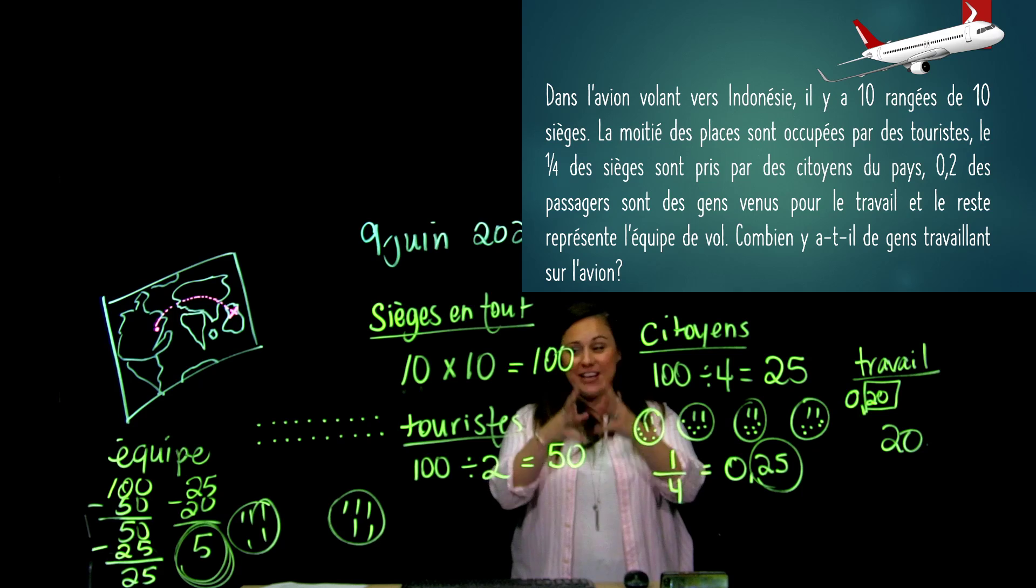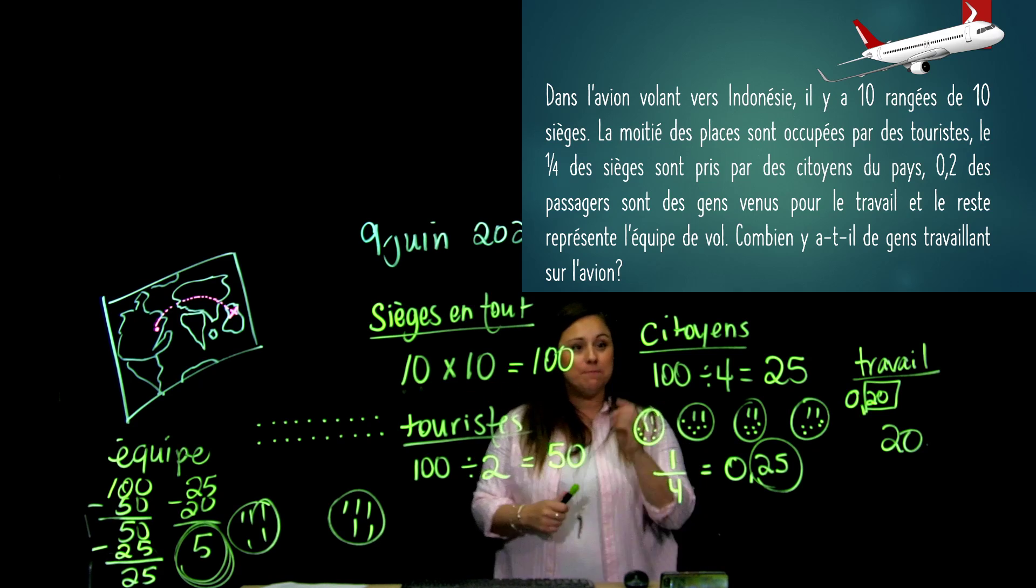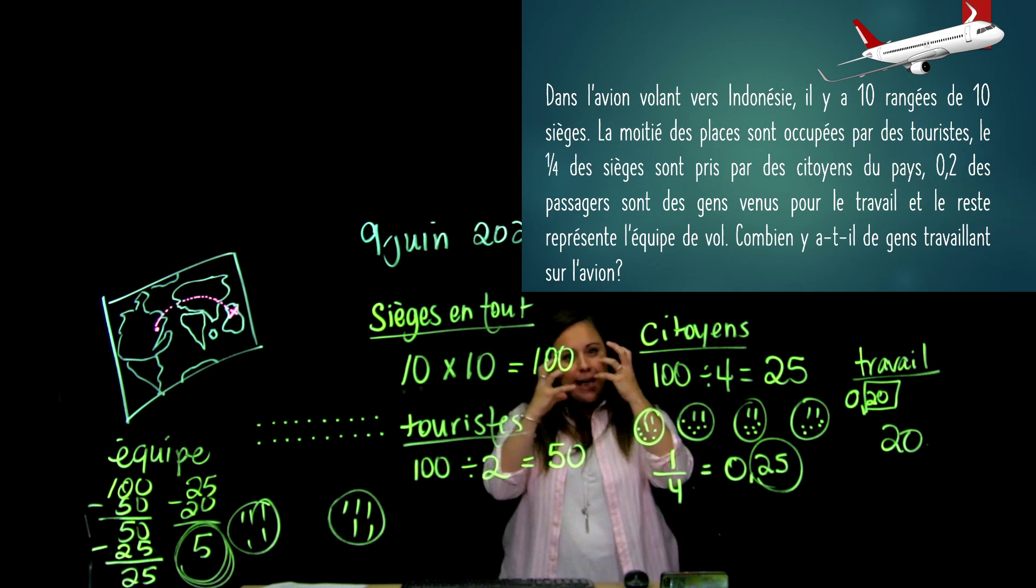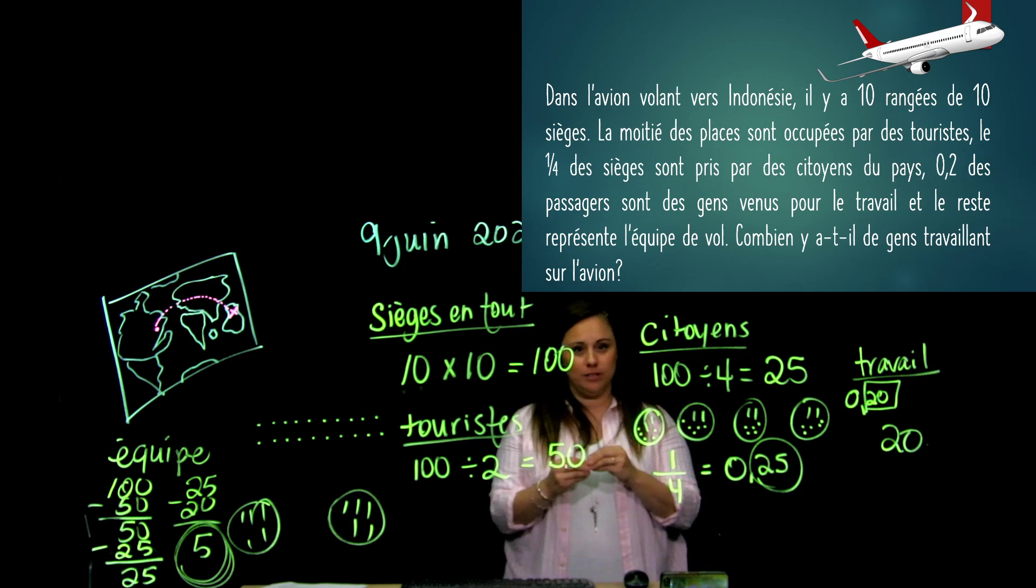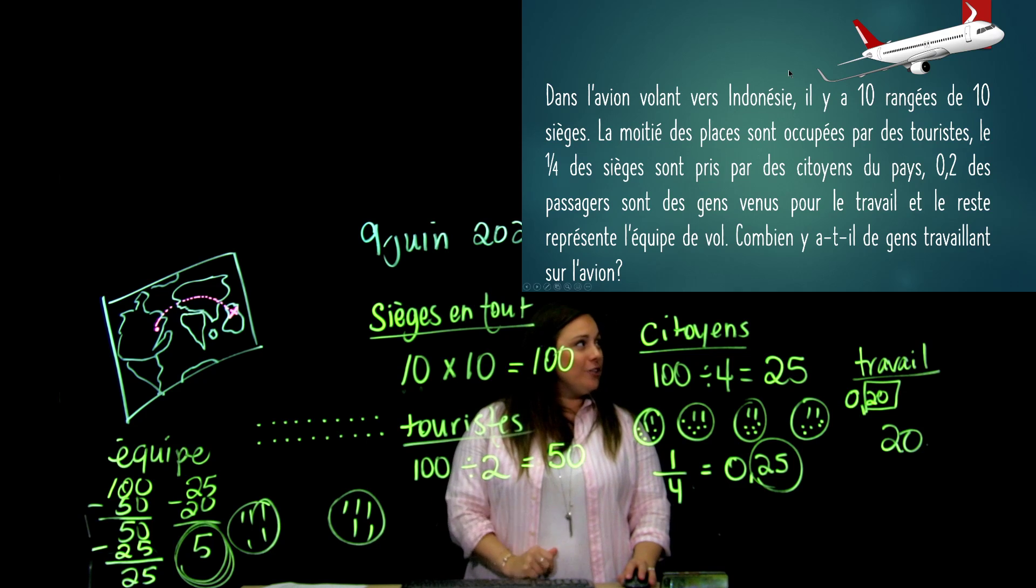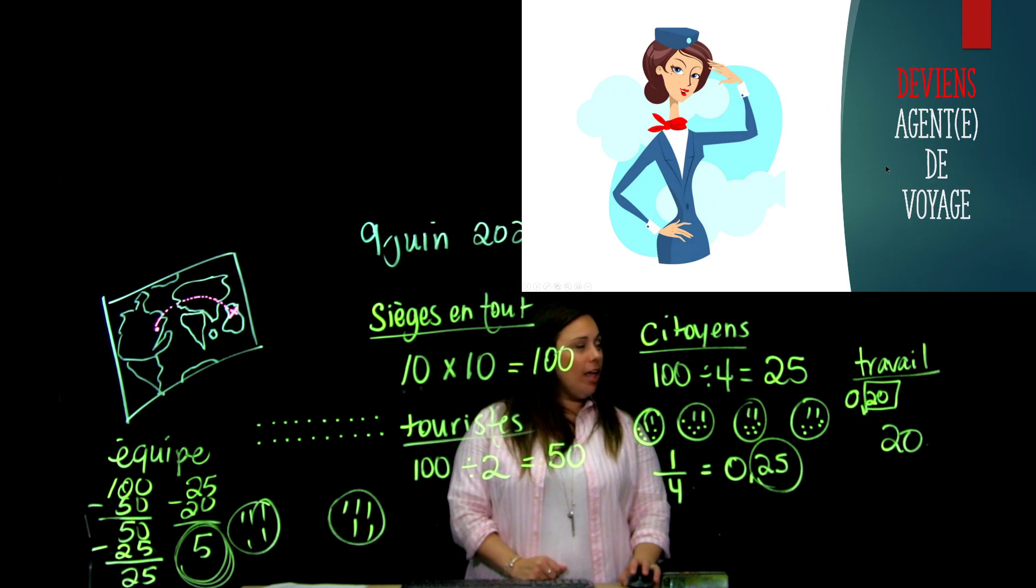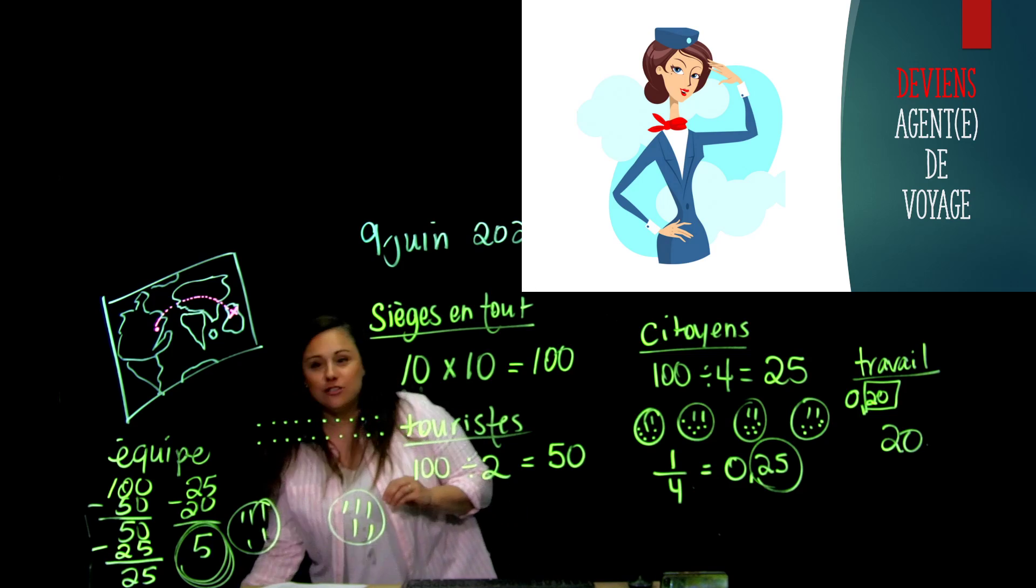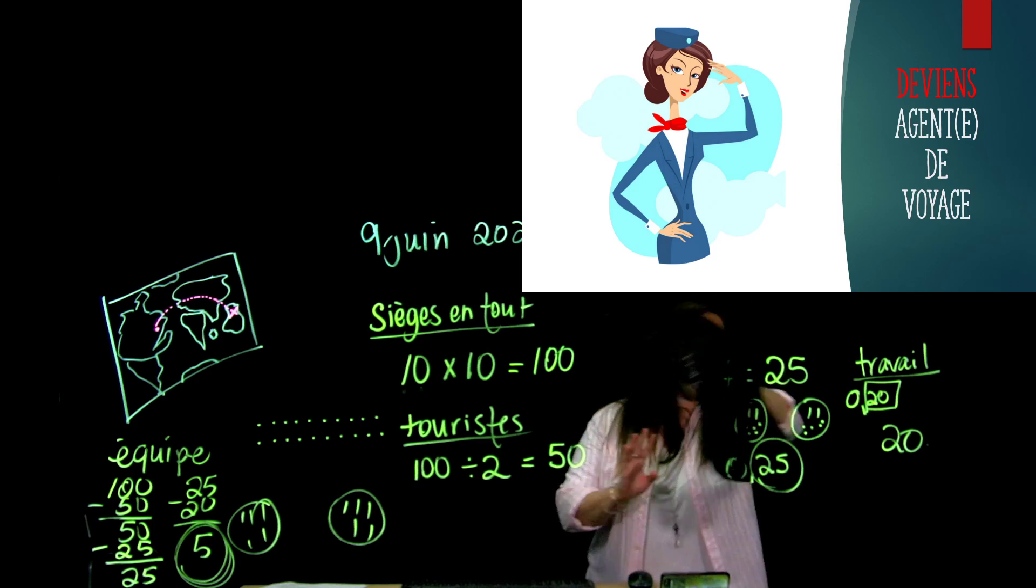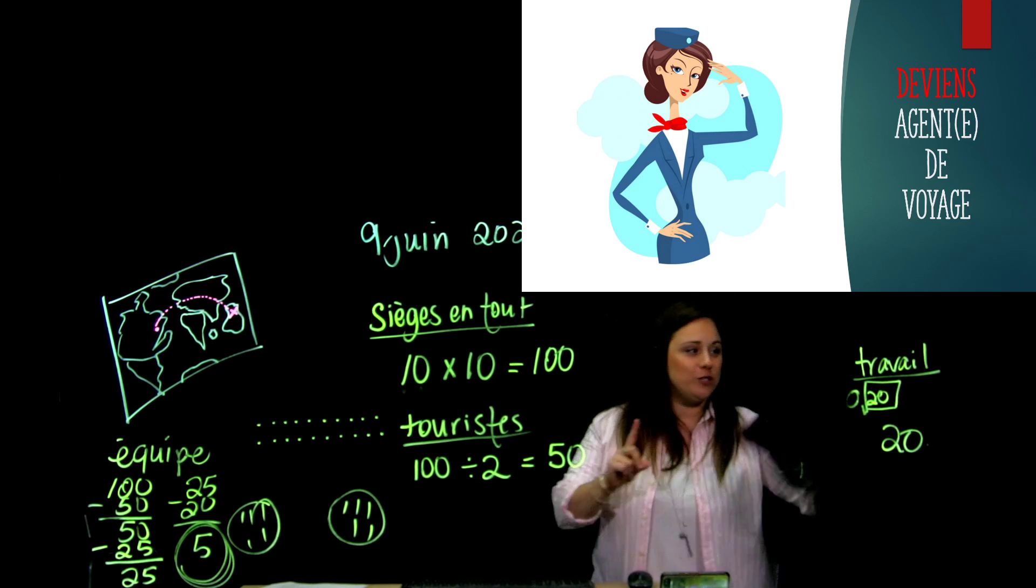Alors, si tu es arrivé au même résultat que moi, je te félicite. C'est pas facile. Quand on est en mélange de pourcentages, de nombres décimaux, de fractions, il faut se rappeler que ça a tout du sens ensemble. Ça veut sûrement dire la même chose. Je termine en te disant que je deviens agent de voyage. Et je te fais rapidement, parce que c'est ton défi du jour, découvrir une destination que je veux que toi, tu me fasses découvrir.